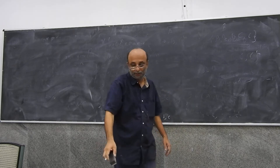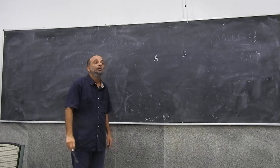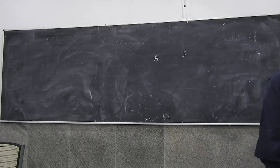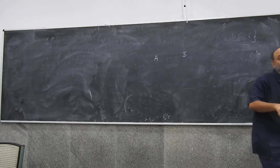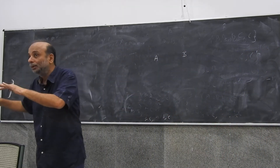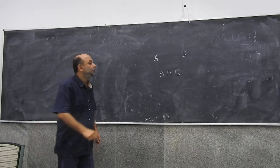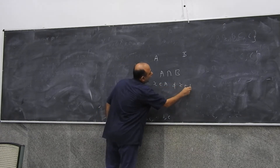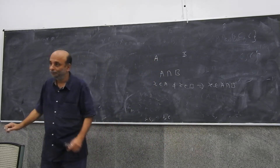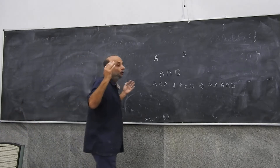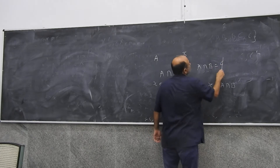Now let me introduce another object. Think of a set A and a set B. When we thought of union, we thought of a set of elements which belong to either A or B. Now think of elements which belong to A and B — which is different from A or B. This is called the intersection. If X belongs to A and X belongs to B, it implies X belongs to A intersection B.